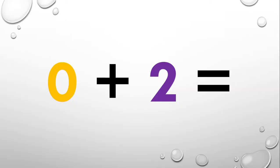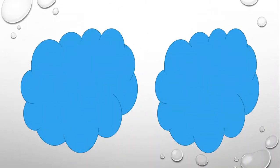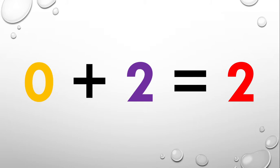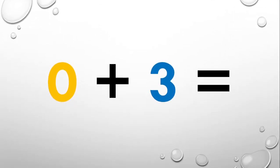Now what about zero plus two? Do you know what zero plus two equals? Well, let's find out. We have zero stars in the first cloud and we have two bouncy stars in the second cloud — one, two. So that means there are a total of two stars, and zero plus two equals two.